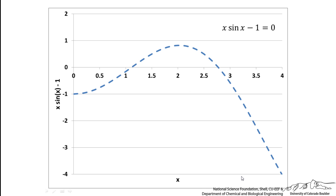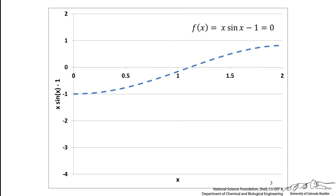To begin, I have plotted the function as a function of x between 0 and 4. We see that we have a zero somewhere between 1 and 1.5, and we also have another zero somewhere between 2.5 and 3. For this demonstration, we are just going to focus on the zero between x equals 0 and x equals 2. So let's zoom in to that region.